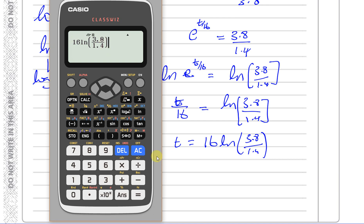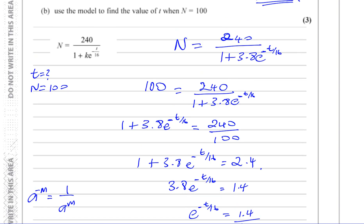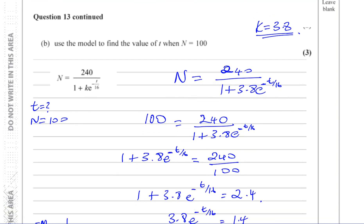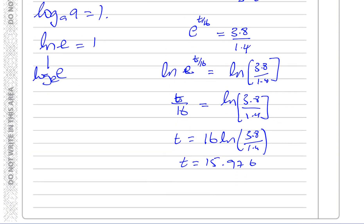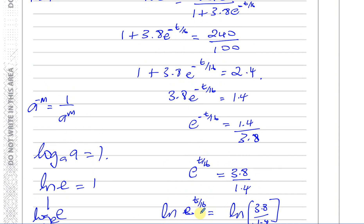Always check that you've typed the right thing in — it's very common to make mistakes. That gives t equals 15.976. Rounding to 3 significant figures, that's 16.0 days. So t equals 16.0 days. That's the answer for part B, and the next part will be answered in the next video.